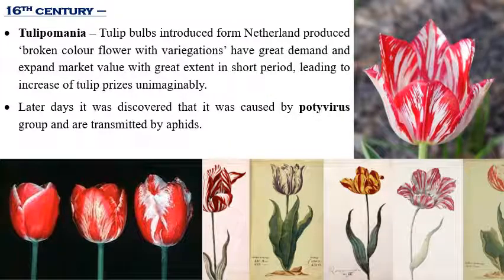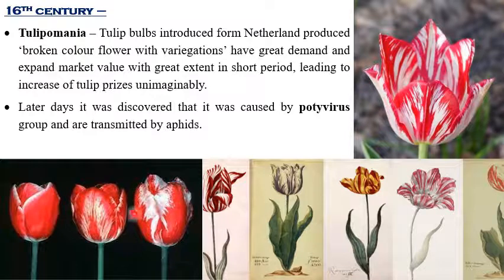Starting with a very old one in the 16th century, it is called Tulipomania — a viral disease and the only viral disease which actually benefited tulip production. Most viral diseases are harmful and reduce production, but this disease increased the value of tulips. Tulips introduced from the Netherlands showed color variations, with red tulips changing to white or showing broken color patterns.